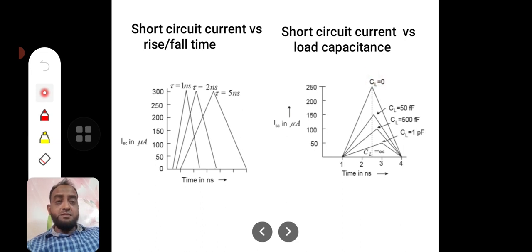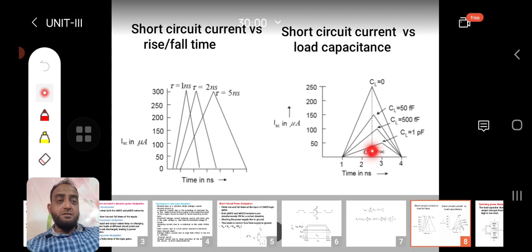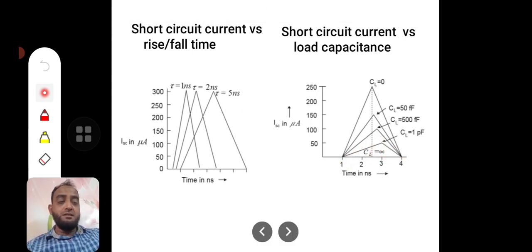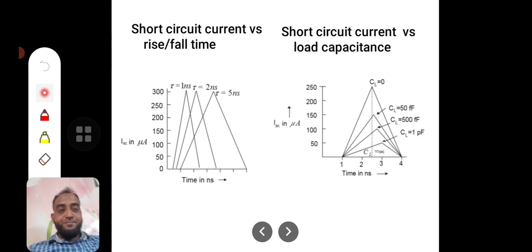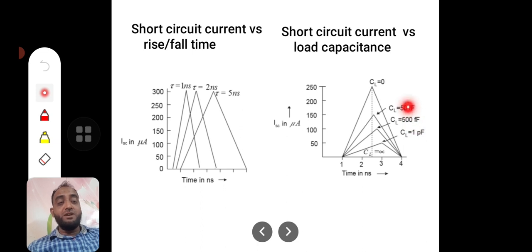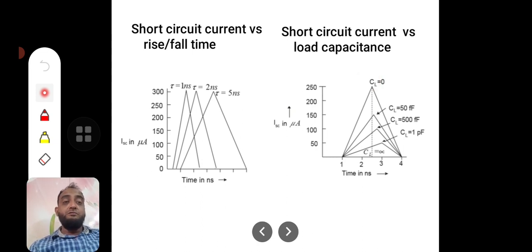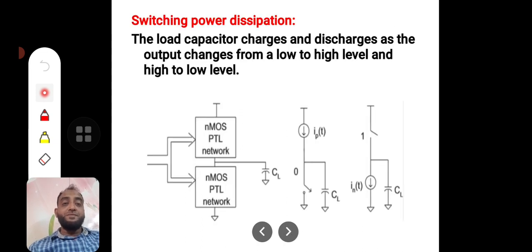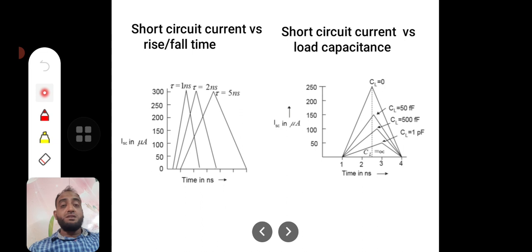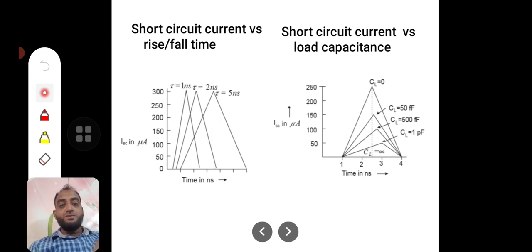When CL is very high — approaching infinite — the peak short circuit current is very small. Conversely, when CL decreases from picofarads toward femtofarads, the short circuit current reaches much higher peak values. Therefore, having a larger load capacitance is actually advantageous in reducing short circuit current. Thank you.